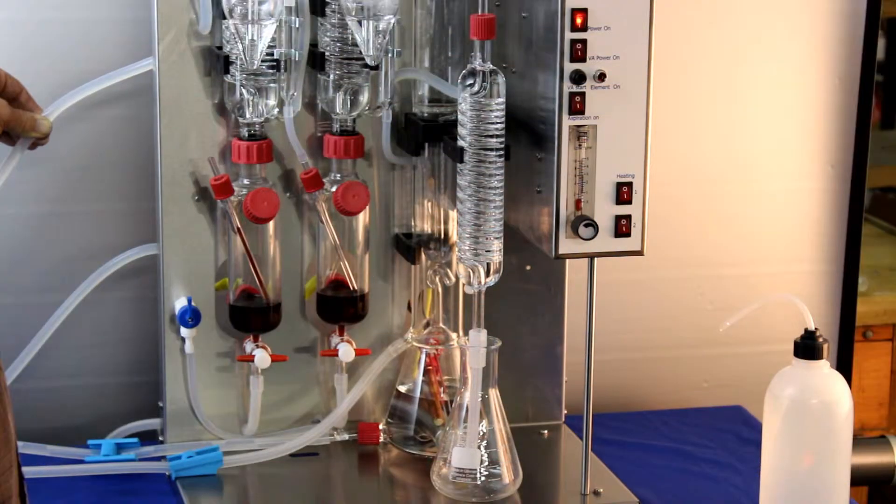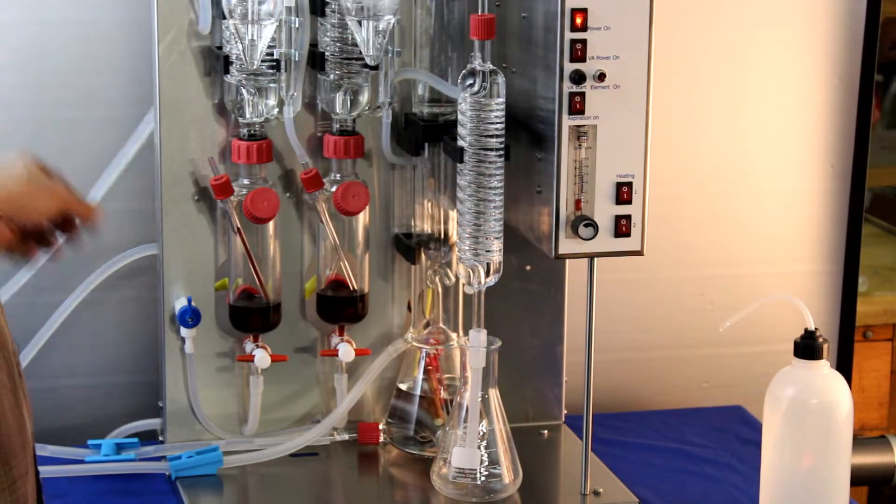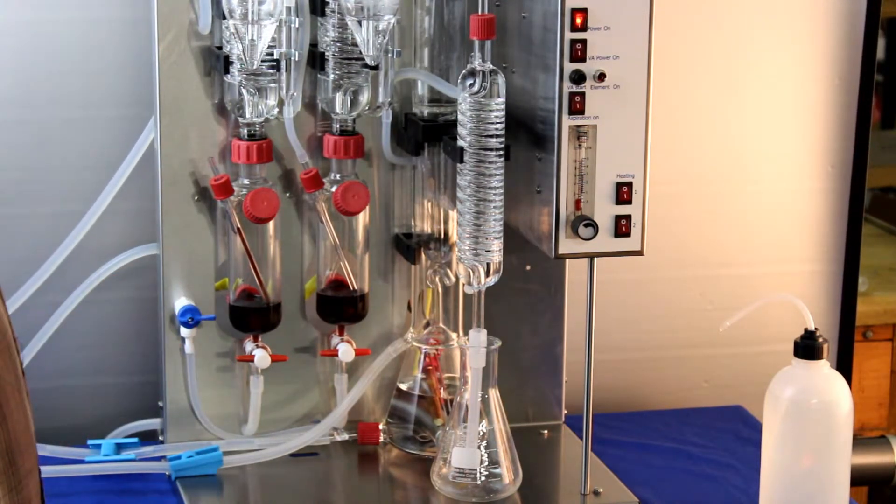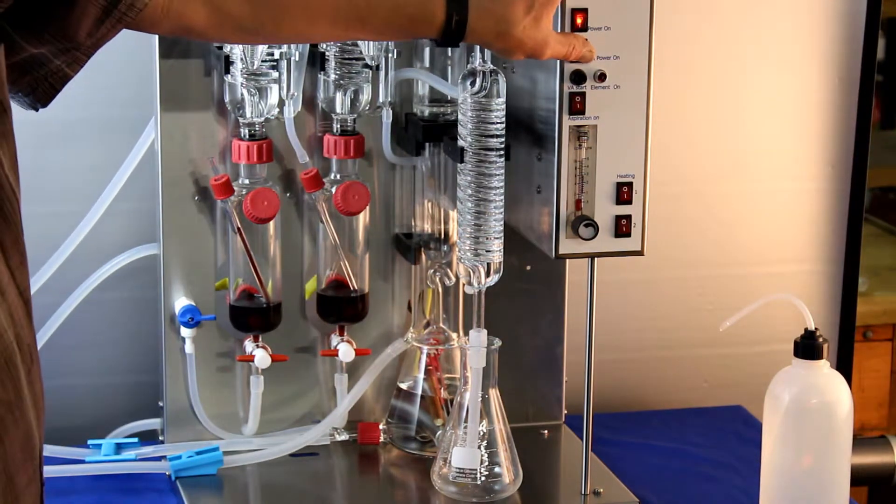We will now start to fill the VA boiler. Fill the boiler with water by opening the blue valve and pinching the water outlet pipe. Remember to close the valve when the boiler is three quarters full.